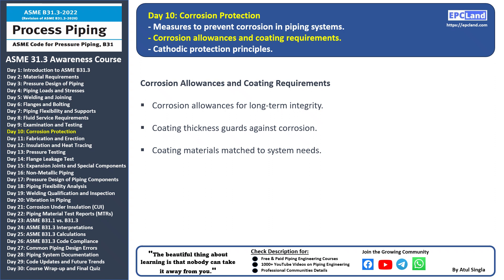Protective coatings: applying protective coatings to the pipe surface is another effective way to prevent corrosion. Coatings act as a barrier, shielding the metal from the surrounding environment, and the thickness of the coating is carefully chosen to provide adequate protection. Coating materials are selected based on the specific requirements of the piping system and the type of fluid being transported. Compatibility between the coating and the pipe material is essential to prevent issues such as delamination or reduced effectiveness. The proper selection of corrosion allowances and coating materials is critical to extending the life of the piping system and ensuring its reliable performance.